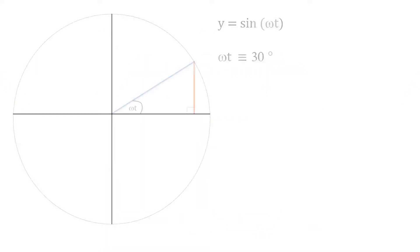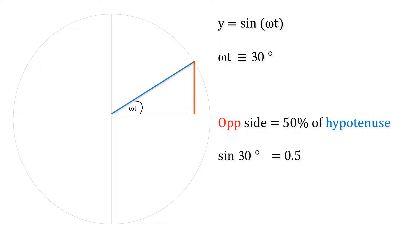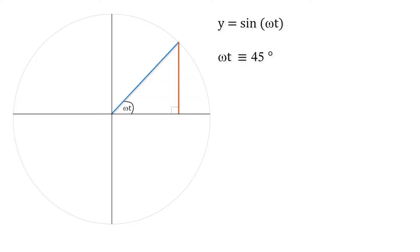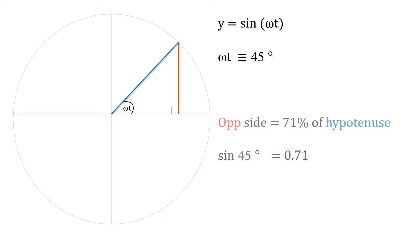We have a unit circle with a radius of 1. Here omega t is equivalent to 30 degrees. Now omega t is equivalent to 45 degrees, and so on.